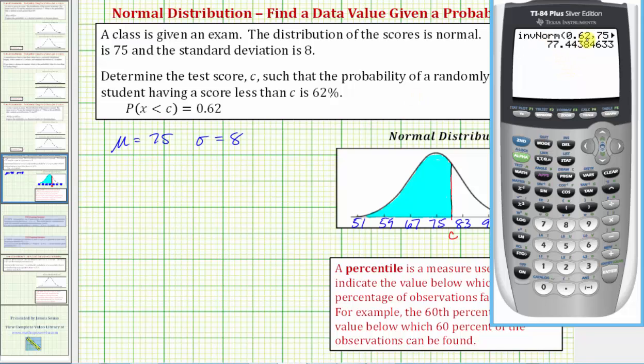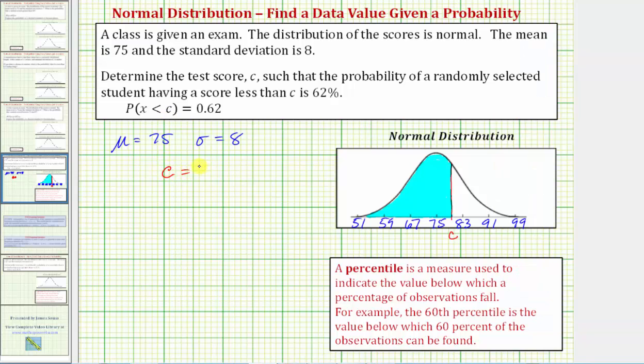If we round to one decimal place we would have c equals approximately 77.4. So we now know c equals 77.4 approximately, which means the probability that x is less than 77.4 is approximately 0.62 or 62 percent. So the test score that we just found would be approximately here on the horizontal axis.